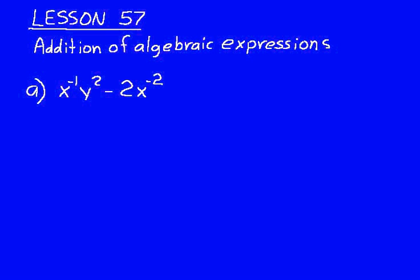x^(-1)y^2 - 2x^(-2). Well, you might think I really can't do any addition there. But you can, because you have those negative exponents which you can change to positive exponents. Then you'll end up with fractions and you can add them together and get one common denominator.